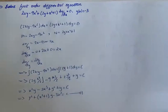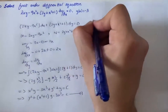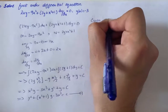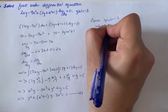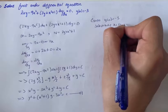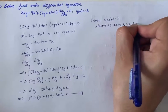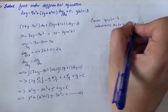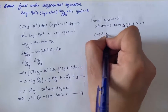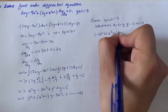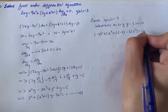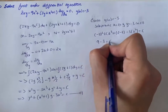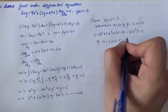From the given initial condition y(0) equals minus 3, we substitute x equals 0 and y equals minus 3 into equation 1. So we have (minus 3) squared plus (0 squared plus 1)(minus 3) minus 0 cubed equals C. That gives us 9 minus 3 equals C, so C equals 6.